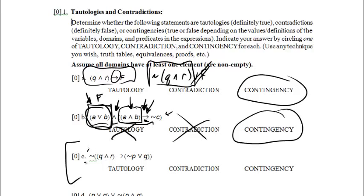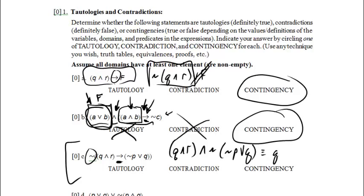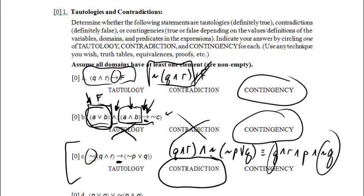For the next problem, I'm going to start by moving the negation inside. This negation is on a conditional. The negation of a conditional p→q is p and not q, so the negation of (q∧r)→(¬p∨q) becomes q and r, and p and not q. I've got q and not q here, and q and not q will be false, making the whole statement a contradiction.